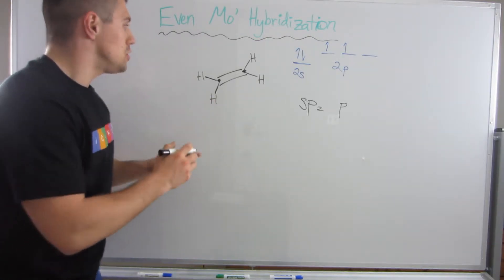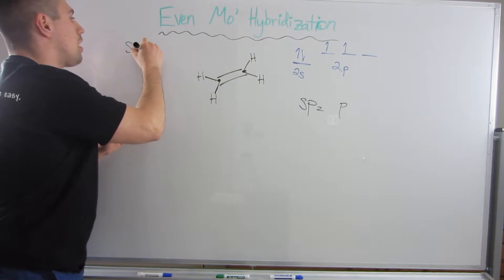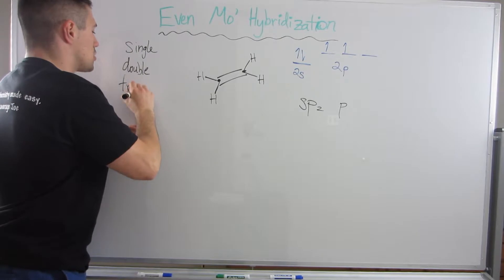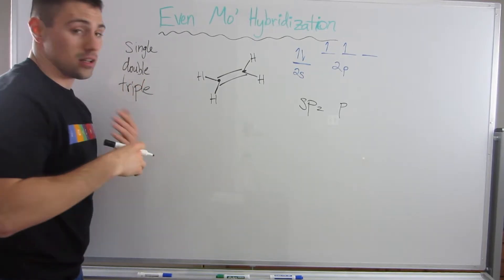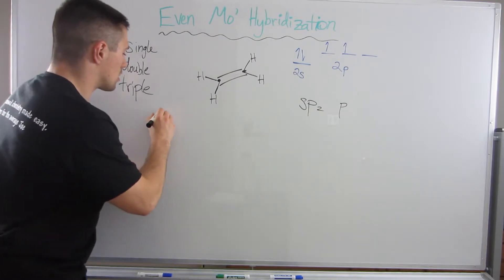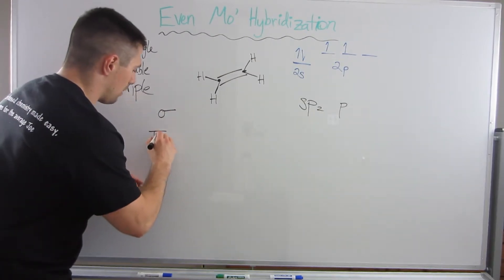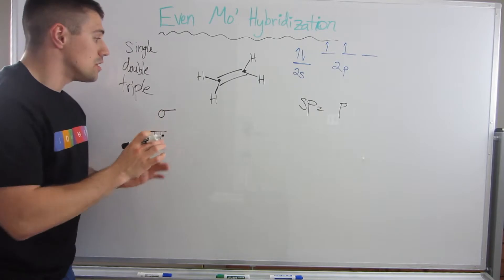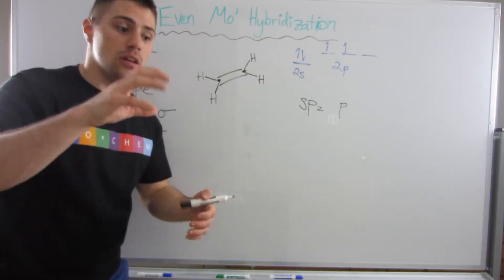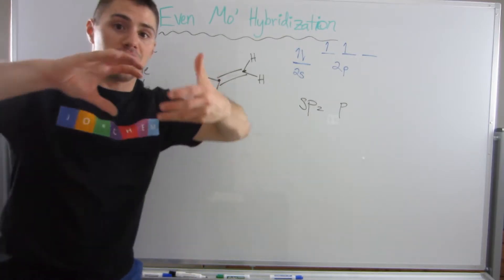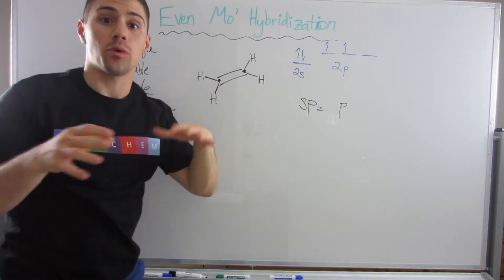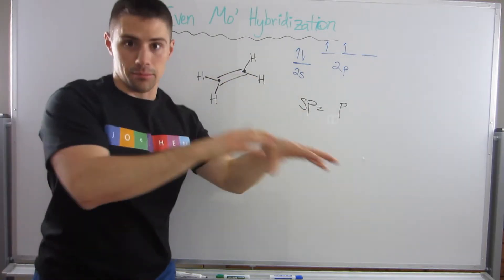I know you've heard the terminology single bond, double, and triple, so we're going to expand upon this knowledge. There are two types of bonding: sigma bonds and pi bonds. Sigma bonds are single bonds where one atom's orbital overlaps head-to-head with another atom's orbital, like a handshake. The first bond atoms ever make with each other are sigma bonds.